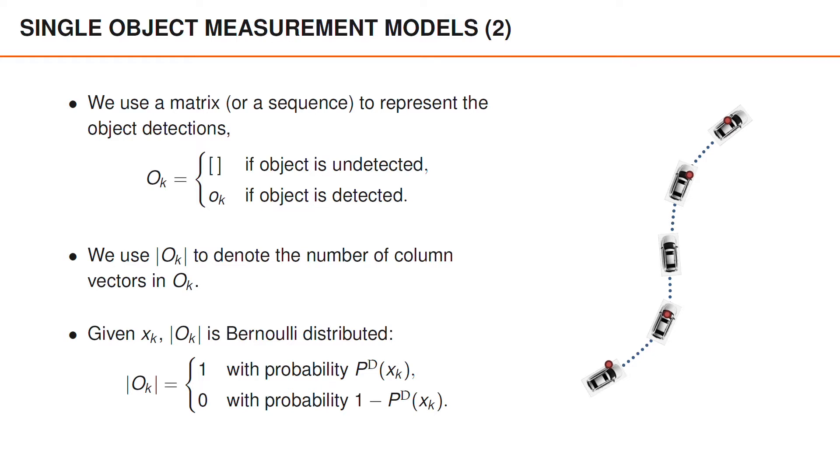As discussed last week, in some contexts, objects can generate several detections. We refer to models where objects can generate multiple detections as extended object models, and we return to discuss such models in the last week of this course. But until then, we will consistently assume that single objects can generate at most one detection.